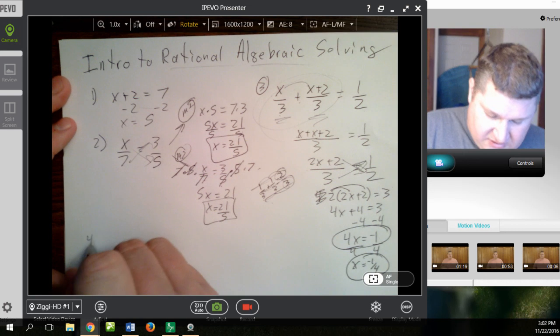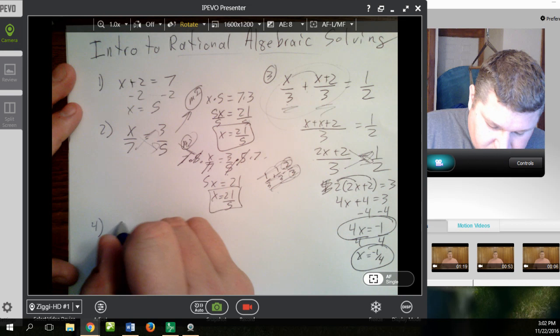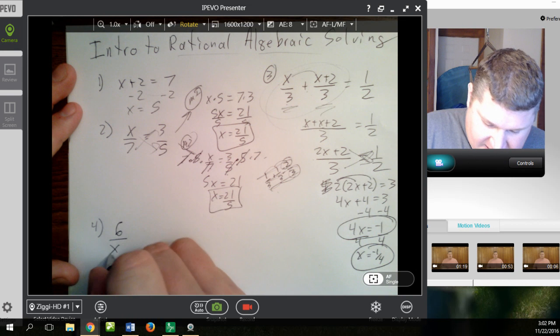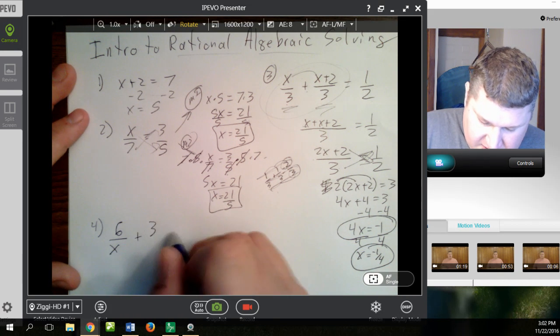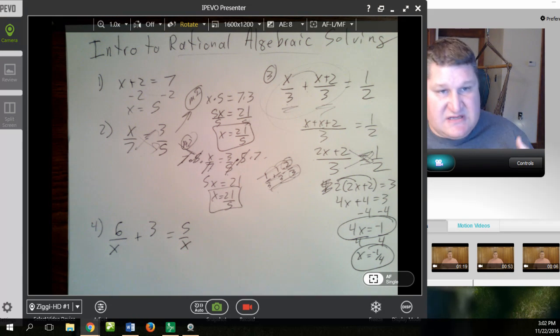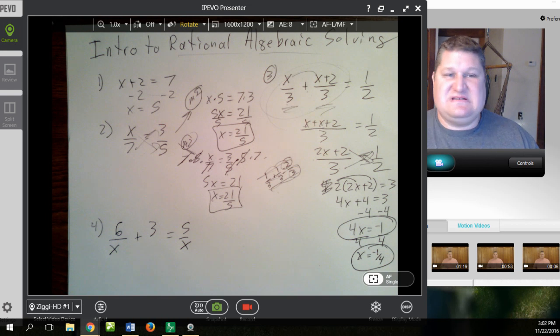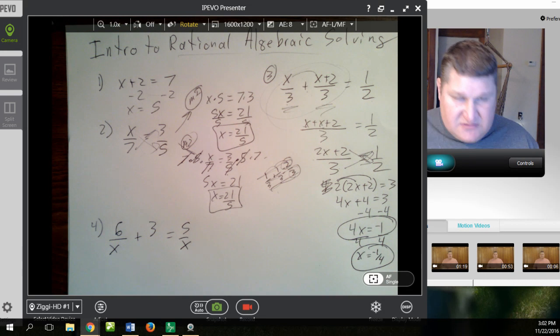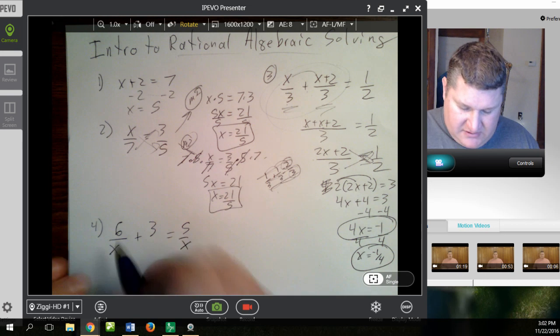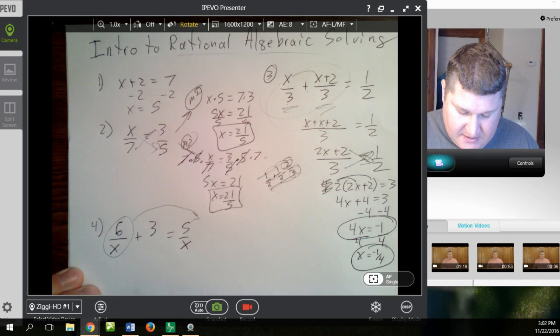Number 4, 6 over x plus 3 equals 5 over x. Now this is a bit more challenging because the x's are on the bottom. Second of all, I've got x's on both sides, so it's just kind of a mess. Well, first things first, let's get all the x's to one side.